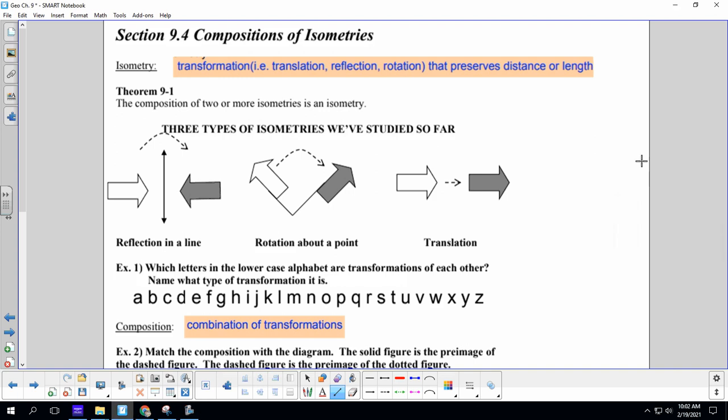All right, geometry students, today you get a 2-for-1. We get 9.4 and 9.5 in one lesson.